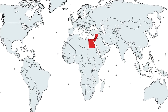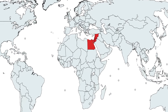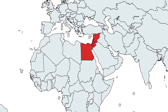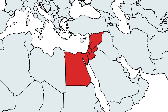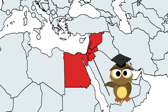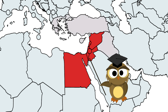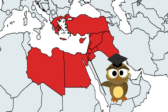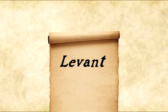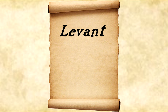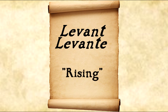The Levant is an approximate, historical, geographical term which refers to a large area in the eastern Mediterranean. In its widest historical sense, the Levant included all of the eastern Mediterranean, both its islands, and all of the countries along the eastern Mediterranean shore, extending from Greece to Cyrena in modern-day Libya. The term Levant comes from the Italian word Levante, meaning rising, implying the rising of the sun in the east.